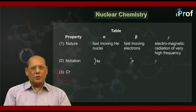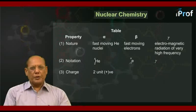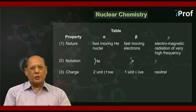Third, charge. Alpha particles carry two-unit positive charge. Beta particles carry one-unit negative charge. Gamma particles are, of course, neutral.